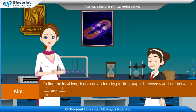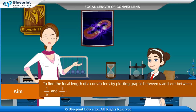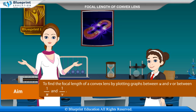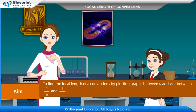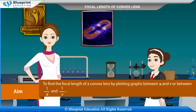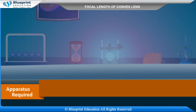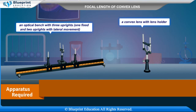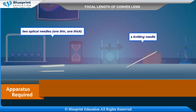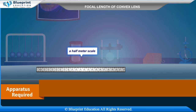Our aim is to find the focal length of a convex lens by plotting graphs between U and V or between 1/U and 1/V. Apparatus required: an optical bench with 3 uprights (1 fixed and 2 with lateral movement), a convex lens with lens holder, 2 optical needles (1 thin, 1 thick), a knitting needle, and a half metre scale.